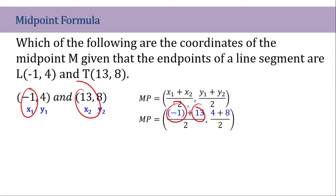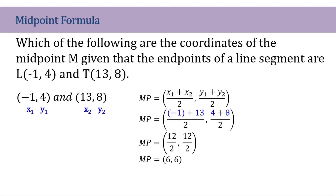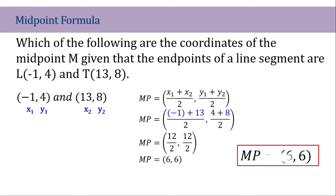So for that, we have our midpoint formula. Substitute our values: x sub 1 and x sub 2, that is negative 1 and 13 — add them together. Then 4 and 8 for y sub 1 and y sub 2. Let's simplify: negative 1 plus 13 is 12, and 4 plus 8 is 12. So 12 over 2 and 12 over 2 gives us 6 comma 6. So the midpoint M is (6, 6).